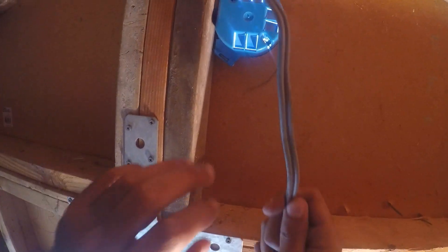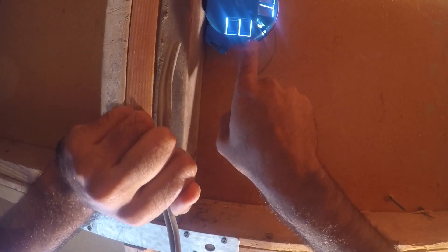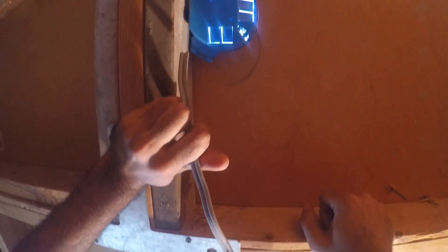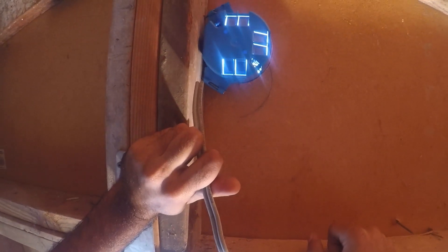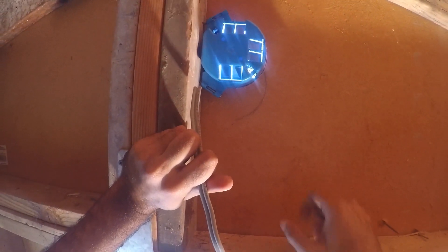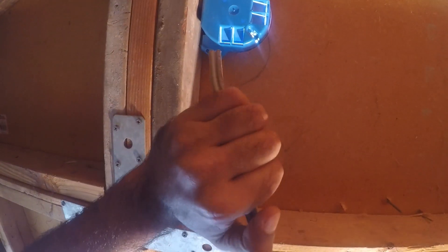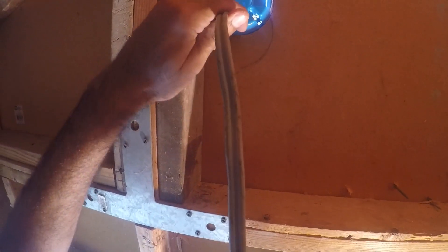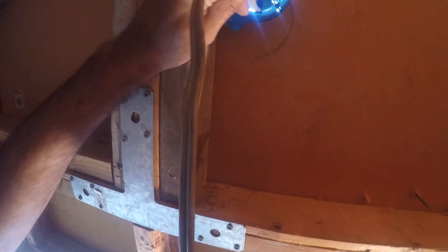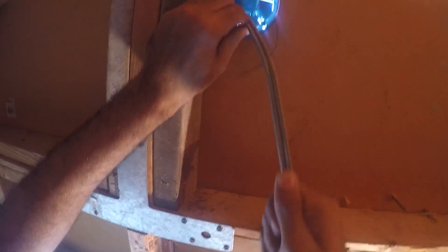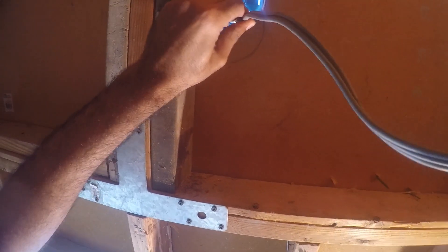So we're going to start feeding the wire through this plastic tab right here. This is a strain relief - essentially it keeps the wire from coming out of the box if there's some sort of pull on it. So we'll feed about six to eight inches through there, and you can always come back later and cut it.